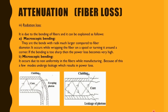Radiation loss is due to bending of the fiber. There are two types: macroscopic bending, where the bends have radii much larger compared to the fiber diameter — occurring when fibers are wrapped on a spool or turned around a corner. If the bending is too sharp, power loss becomes very high. Microscopic bending occurs due to non-uniformities from manufacturing defects, causing a few modes to radiate, which results in power loss.